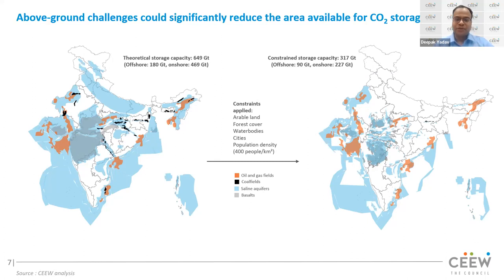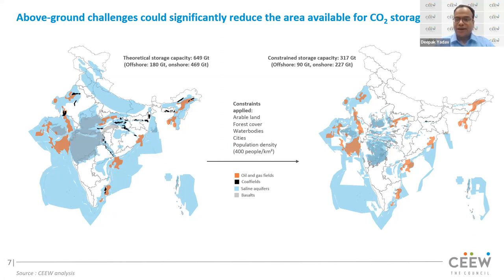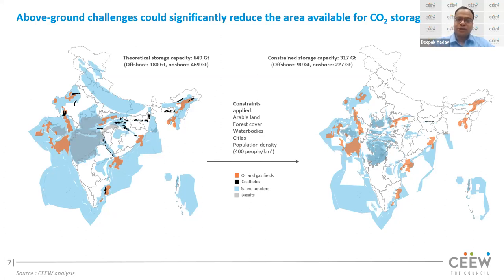To understand the difference between the two images: consider the Indo-Gangetic plain — Uttar Pradesh, Bihar, Himachal Pradesh, and Punjab. There is significant potential for CO2 sequestration in saline aquifers there. However, since we are considering a cutoff population density of 400 people per square kilometer, and the Indo-Gangetic plain is very densely populated, it is not possible to sequester CO2 there. Therefore, we exclude the entire CO2 sequestration possible in saline aquifers in the Indo-Gangetic plain, bringing 649 gigatons down to 317 gigatons constrained realistic CO2 storage potential.